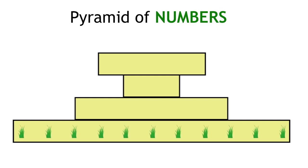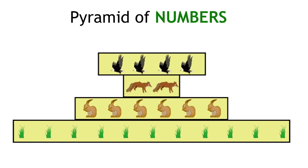Let's look at the following pyramid of numbers, which doesn't take into account the size of organisms. In this ecosystem, we have grass, which is eaten by rabbits, who are then eaten by foxes, who are finally eaten by eagles.